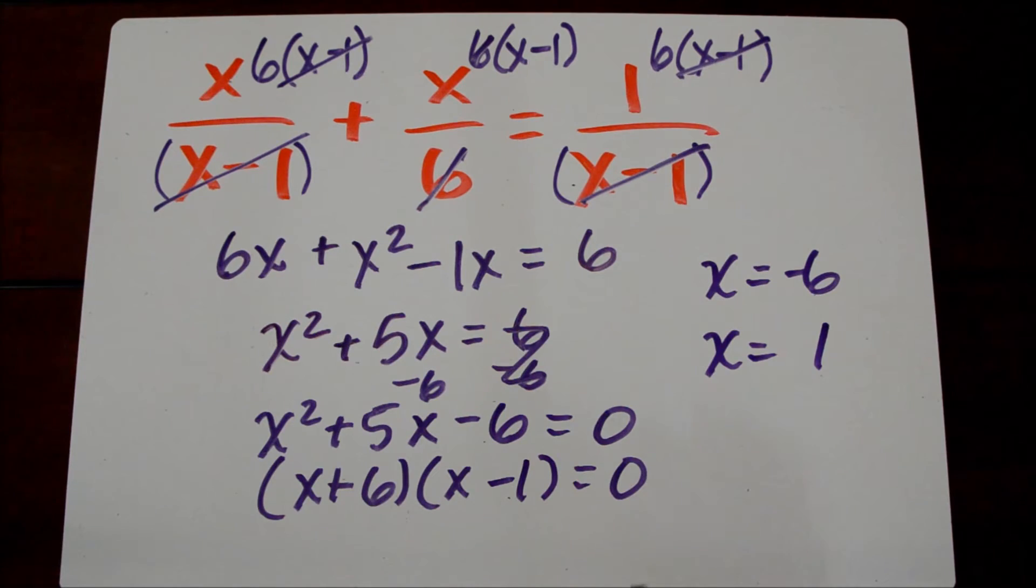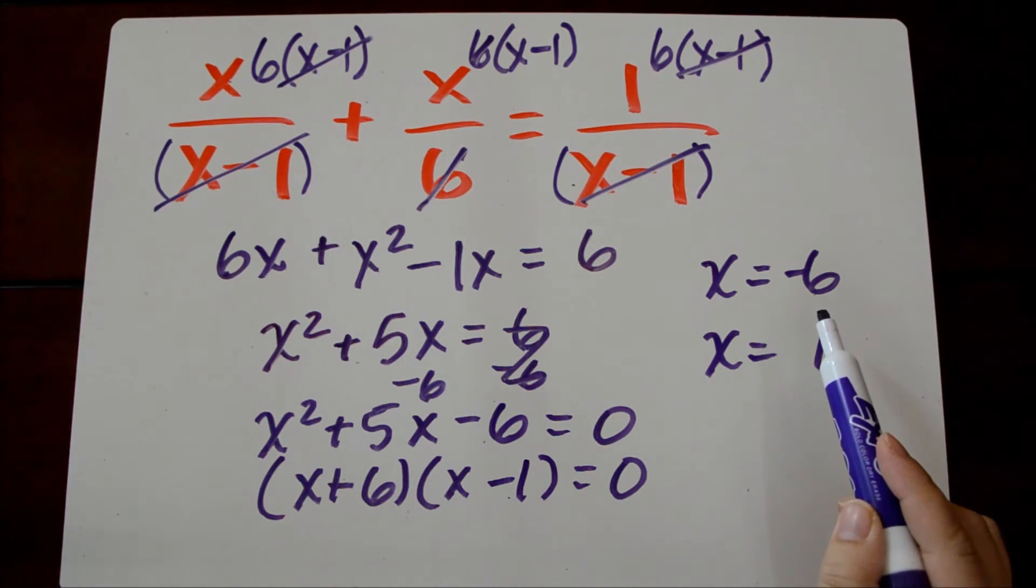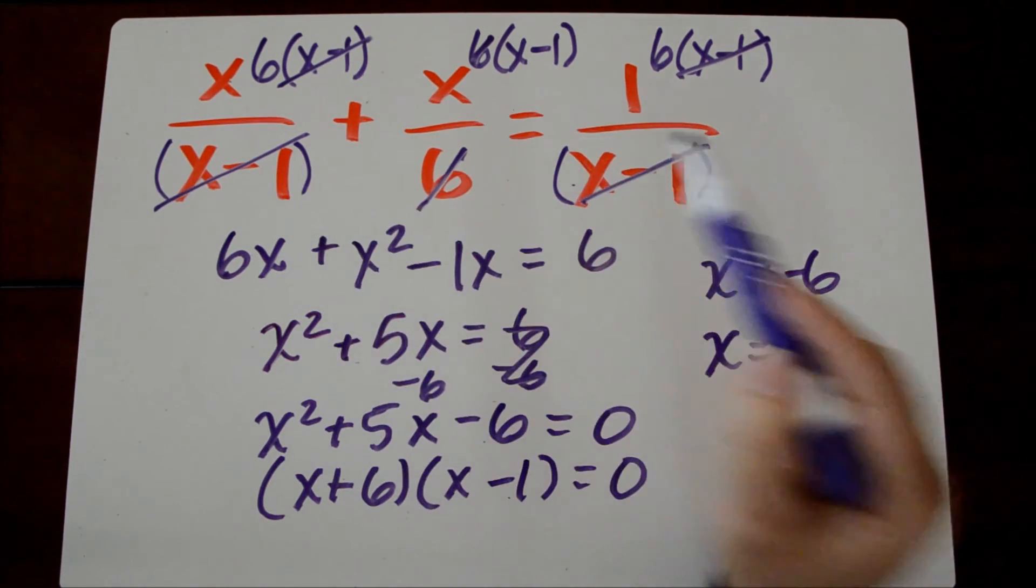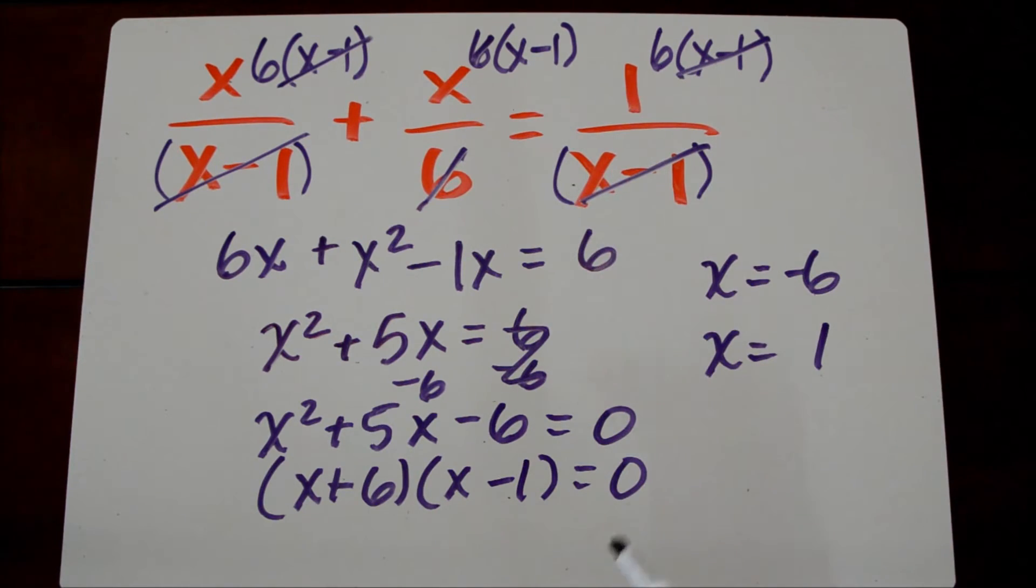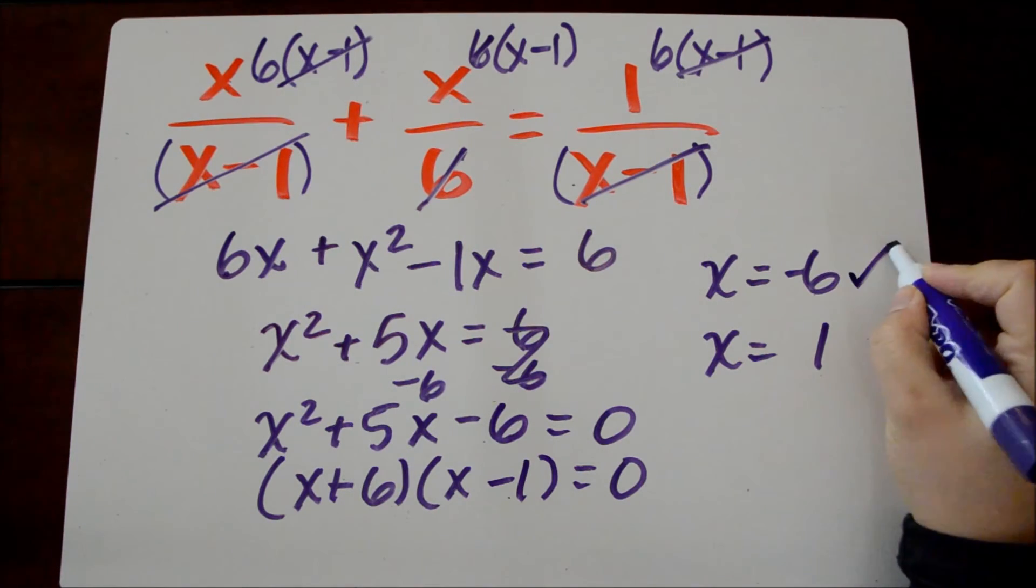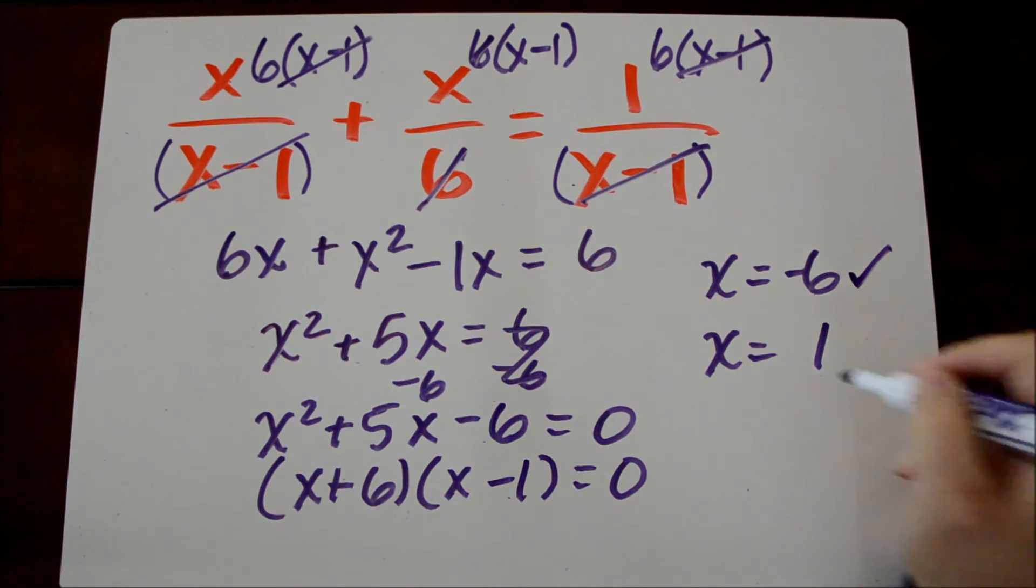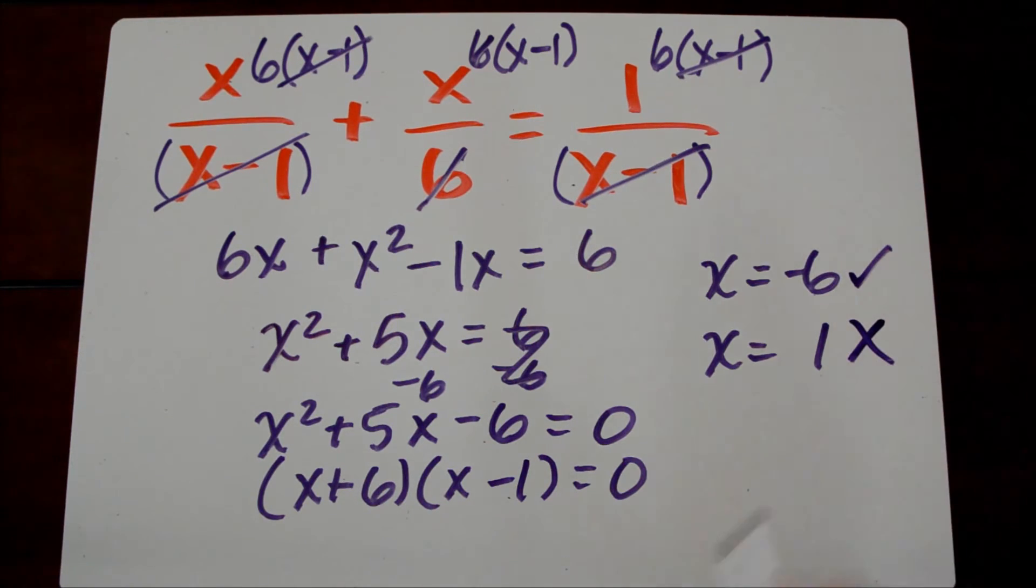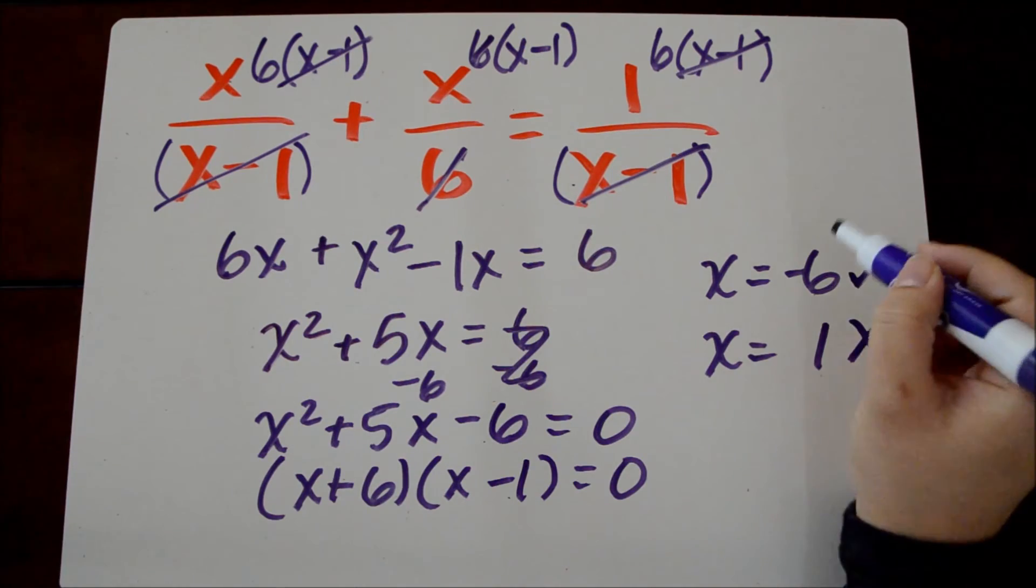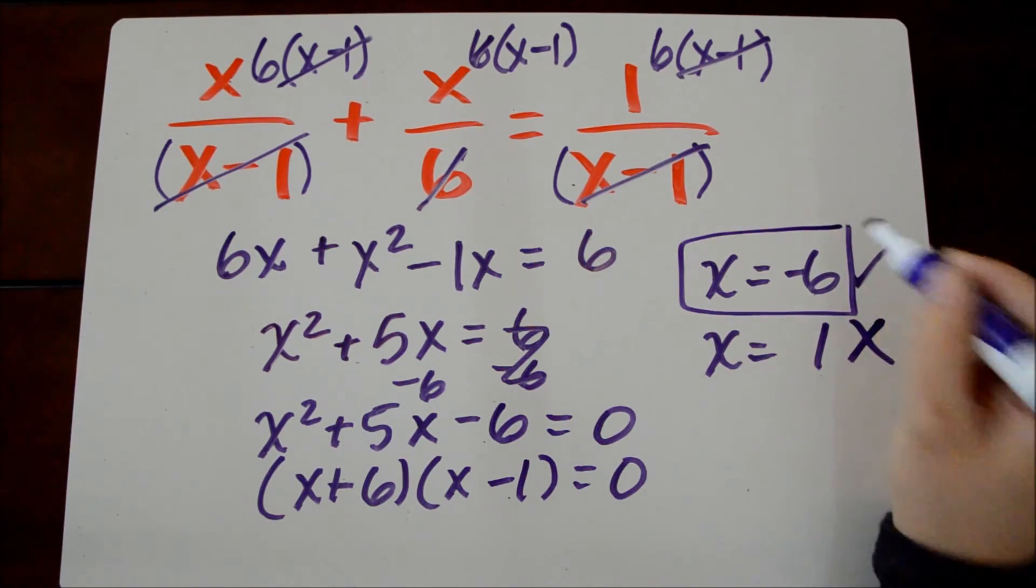And what we're going to do is substitute those back into the equation to make sure they create true statements. After you do that, you'll discover that negative 6 is in fact a solution, but 1 is not. So that's called an extraneous solution. And so negative 6 is the only solution to this equation.